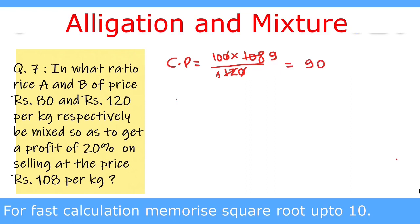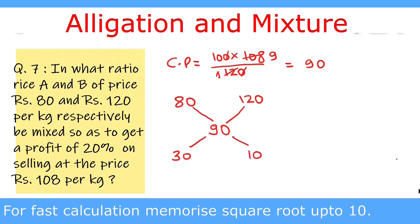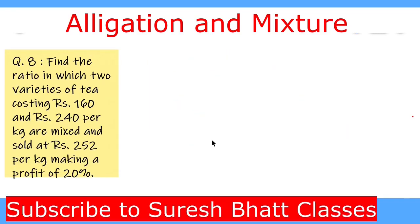Now we apply the allegation rule. Variety A costs ₹80 per kg and variety B costs ₹120 per kg. The mean cost price after mixing is ₹90. Subtracting: 120 − 90 = 30 and 90 − 80 = 10. So variety A : variety B = 30:10 = 3:1. We must mix variety A and B in the ratio 3:1 to achieve the required 20% profit when selling at ₹108 per kg. In such questions, always find the cost price first — do not use the selling price as the mean price.